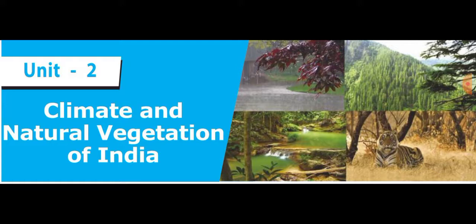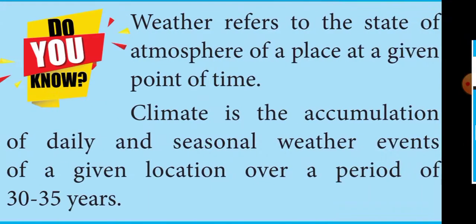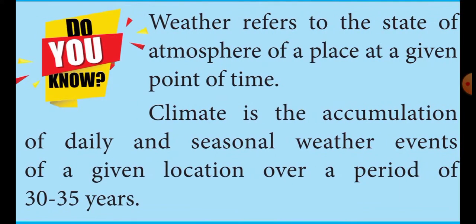First, I am going to explain weather and climate. Weather refers to the state of atmosphere of a place at a given point of time. Climate is the accumulation of daily and seasonal weather events of a given location over a period of 30 to 35 years.